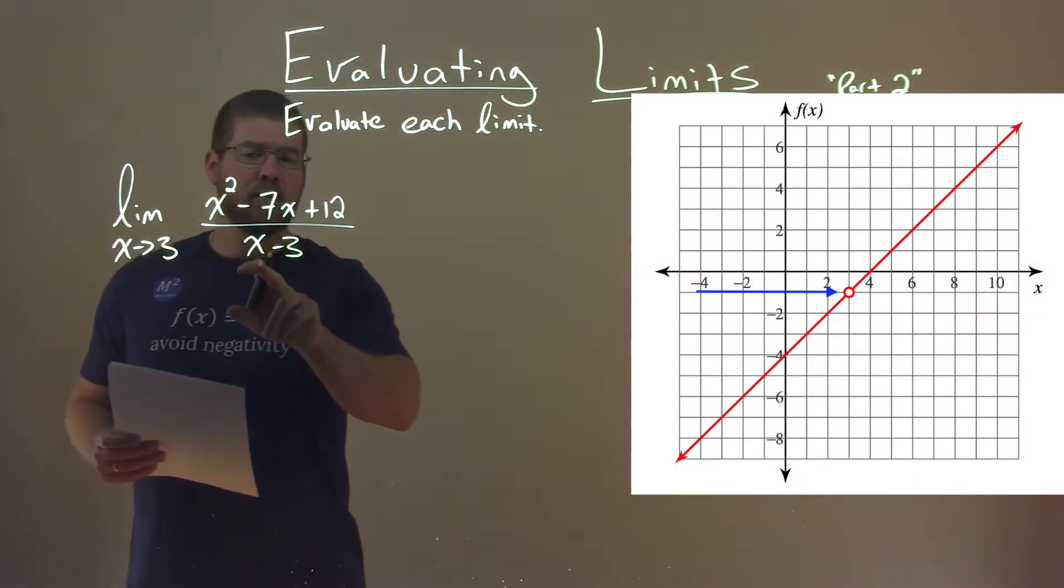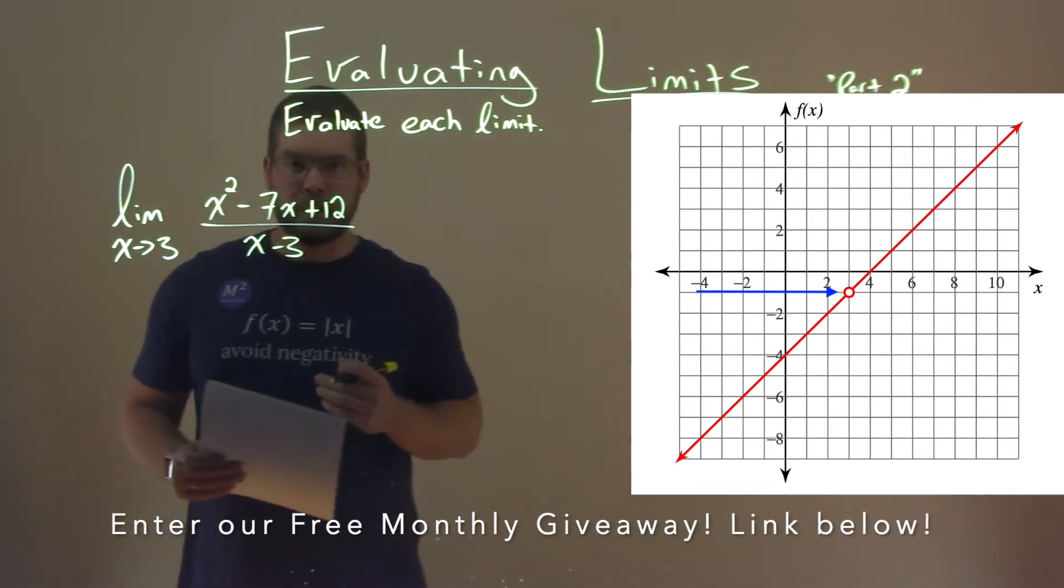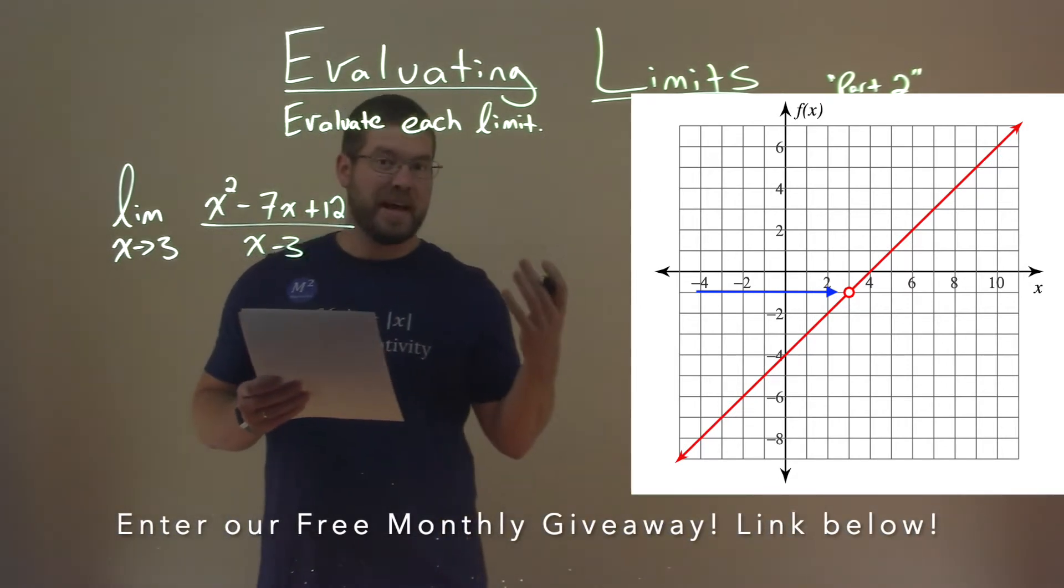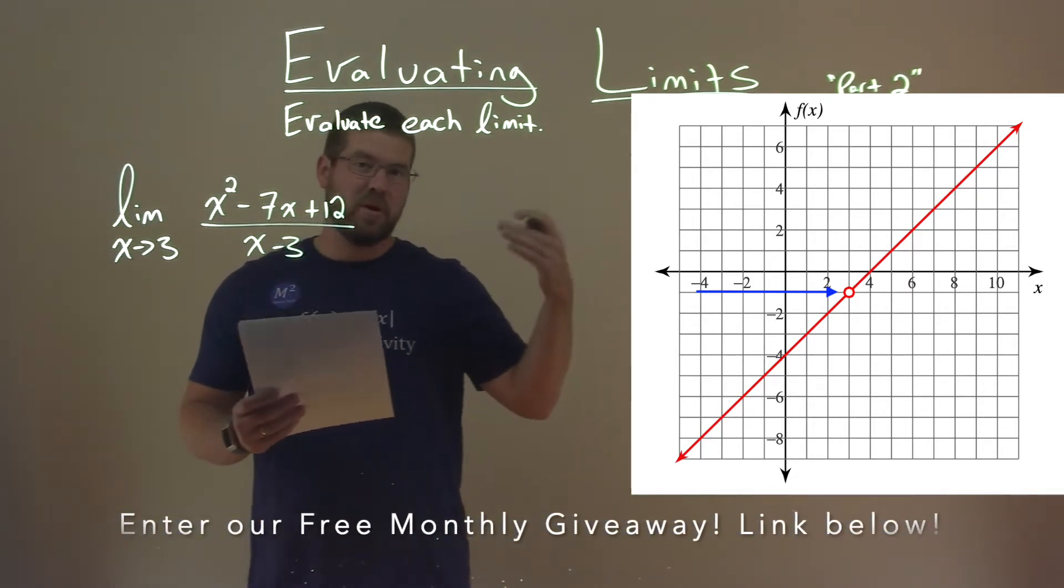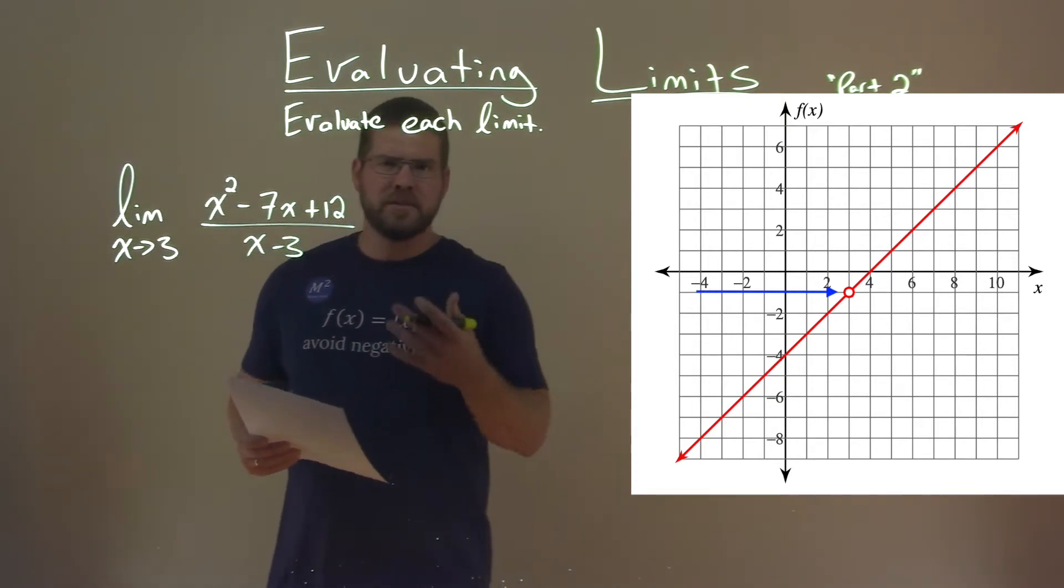This makes sense because when x is positive 3, our denominator equals 0. So we can try to solve this by looking at the graph, and to be honest, it'll be negative 1. It's approaching negative 1, the y value from left and right, but let's show it algebraically because that's what we want to evaluate here.